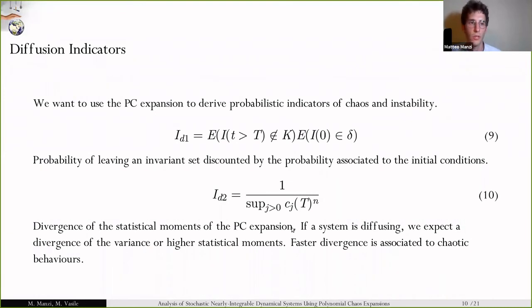Associated to this methodology, we propose two diffusion indicators that can be used to assess chaos and instability. The first one is based on the expectation for a given variable to be bounded inside a fixed set K. The second one is more related to the Lyapunov indicators used in deterministic systems. Here, we're making use of the time-dependent coefficients of the expansion of the state to assess the diffusion, and therefore the chaotic behavior of a given condition.